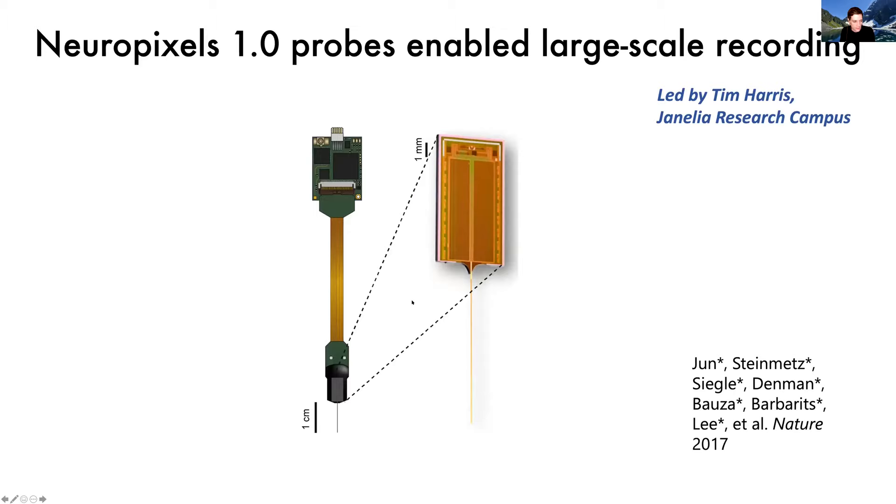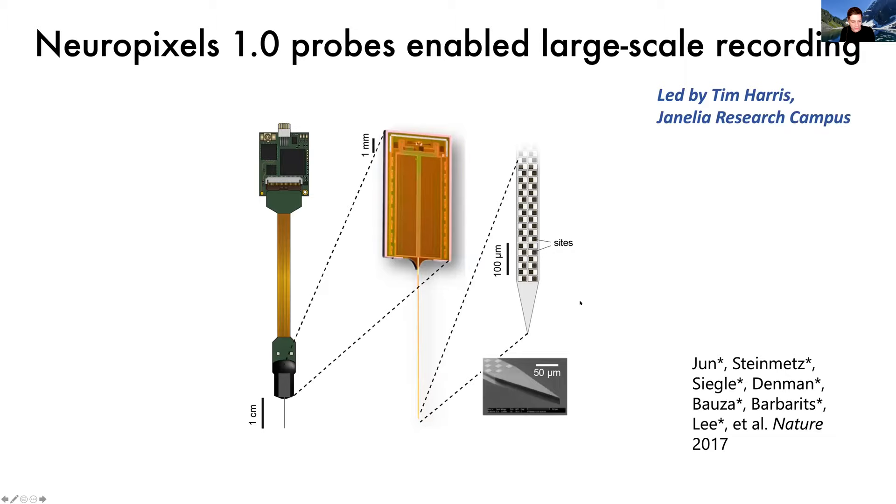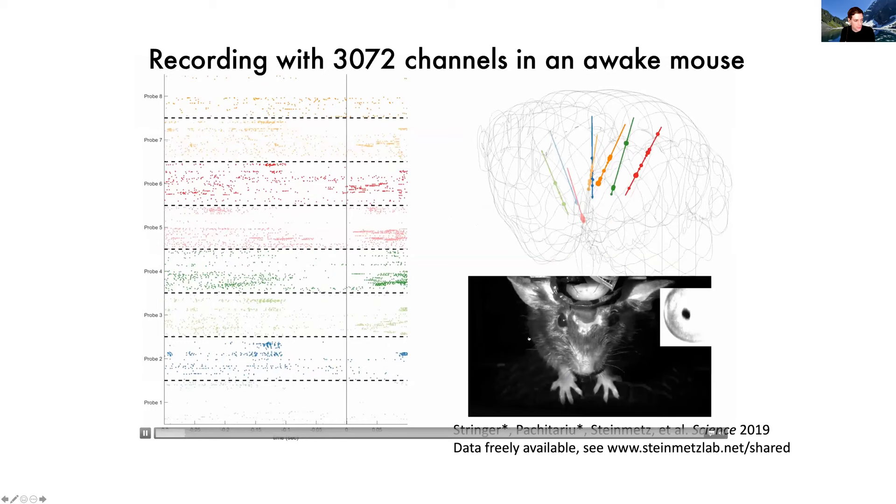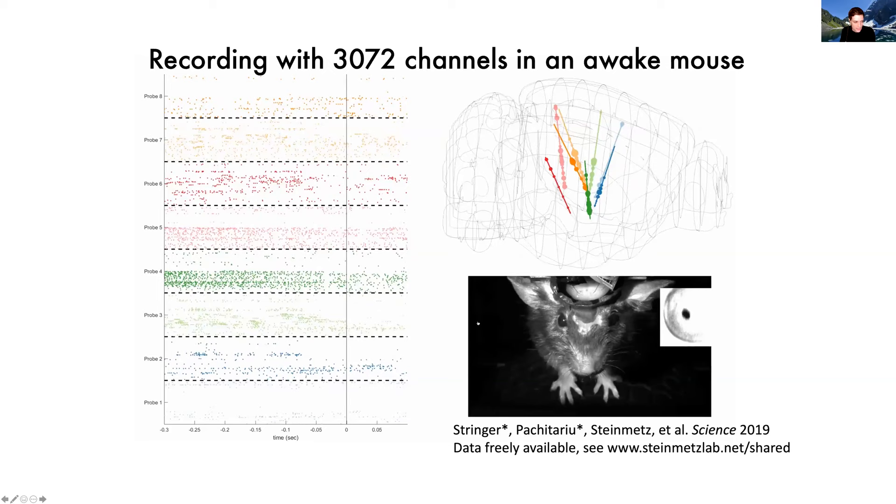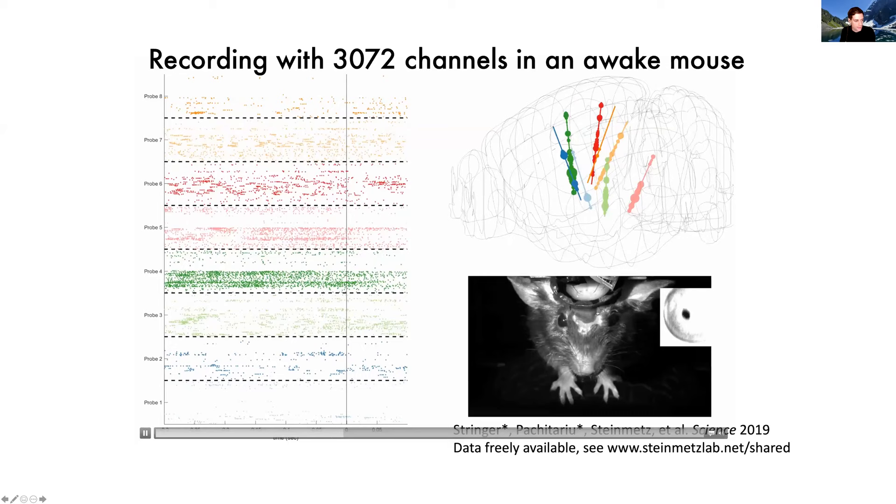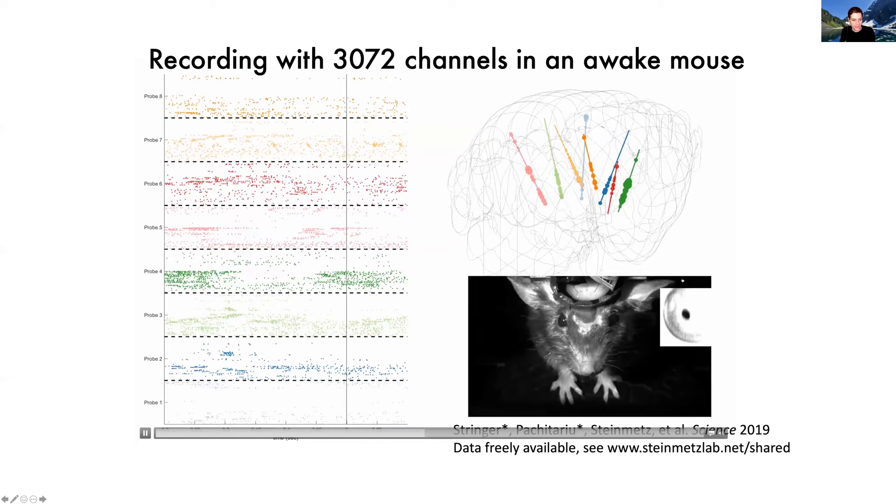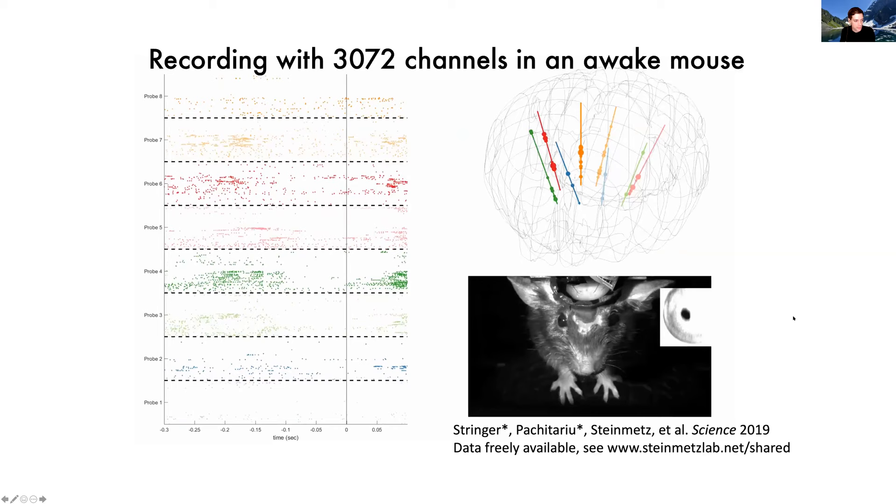The NeuroPixels 1.0 device with a thousand recording sites and 384 recording channels built in, densely spaced along the shank, enabled recording from hundreds of neurons on a single probe simultaneously. And the sort of largest scale application that we did with this, I'm sure this video is not playing too well coming across on Zoom, but hopefully you can get a bit of the idea that what we did in this experiment was to insert eight different NeuroPixels probes into this awake mouse and record spiking activity across more than 3,000 sites simultaneously. This data went into this paper and you can actually download all the data for free if you want to play around with it.